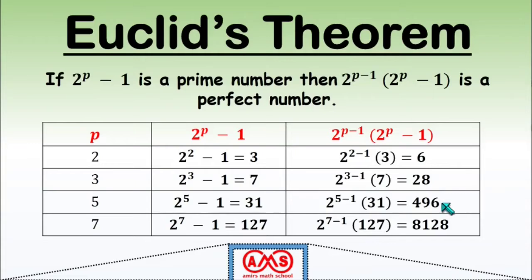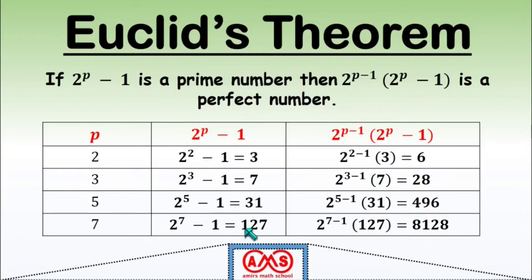By the definition we already proved that 496 is a perfect number. Next, if we take p = 7, then 2^7 − 1 = 127, which is a prime number. So 2^(7−1) × 127 = 64 × 127 = 8128, which will be a perfect number. The next perfect number after 496 is 8128. This is Euclid's theorem about perfect numbers.